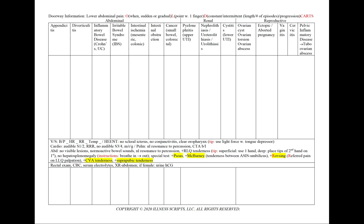Next we note the progression: does the pain appear to be occurring more frequently or more severely? If there has been no progression, we should include that in our patient note to show we asked. To characterize the pain, we note descriptors — for example, is it sharp or dull — along with aggravating and alleviating factors, or radiation. If there are none, we write 'none' in our patient note.